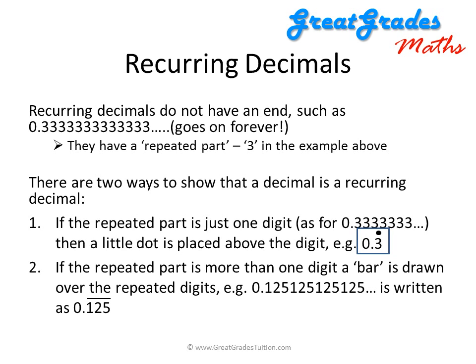If the repeated part is more than one digit, then a bar is drawn over the repeated digits. So for 0.125125125..., the repeated part is 125, and we write it as 0.125 with a bar over the 125.